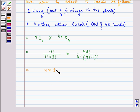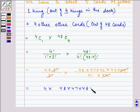This equals 4 times 3 factorial divided by 3 factorial, multiplied by 48 times 47 times 46 times 45, all divided by 4 factorial, where 4 factorial equals 4 times 3 times 2 times 1.